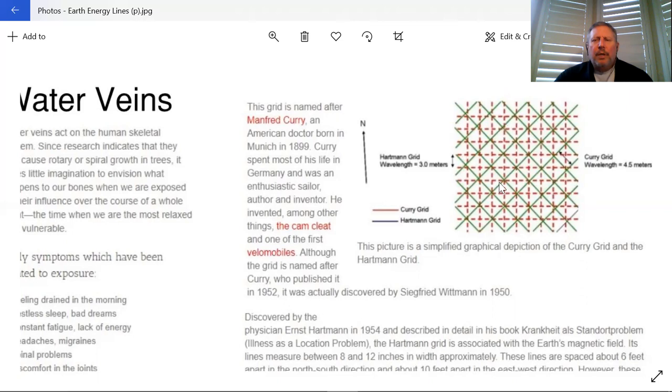What we don't want is to spend too much time on an intersection of a Hartman line and a Curry line. This type of area is very detrimental to us if we're spending a lot of time there. If we're sleeping on this line, or if we have an office where we're spending behind a desk and this line is right beneath us, these lines can be very harmful over a long period of time, unless they're transmuted. That's what we're going to talk about, biogeometry.